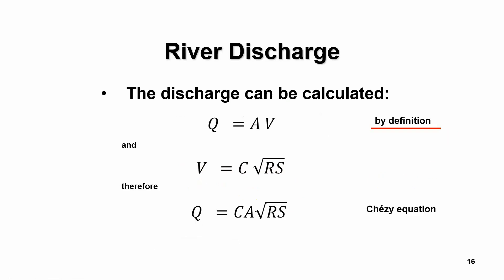River discharge is defined as the velocity of the fluid multiplied by the cross-sectional area. Introducing the Chézy velocity equation — velocity equals C times the square root of R times S — we can express discharge in an open channel as the roughness coefficient C multiplied by the sectional area multiplied by the square root of R times S. This is known as the Chézy equation for discharge.